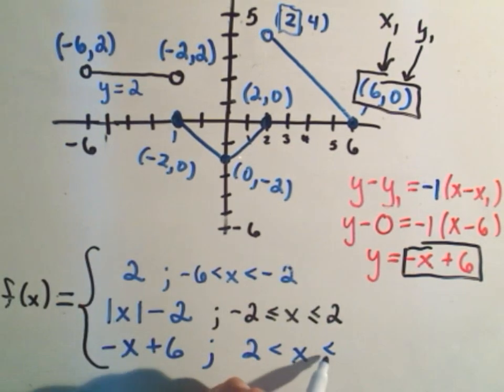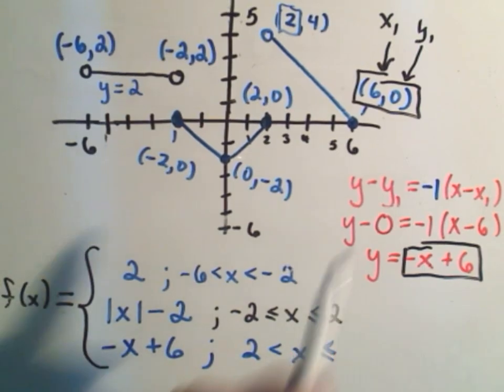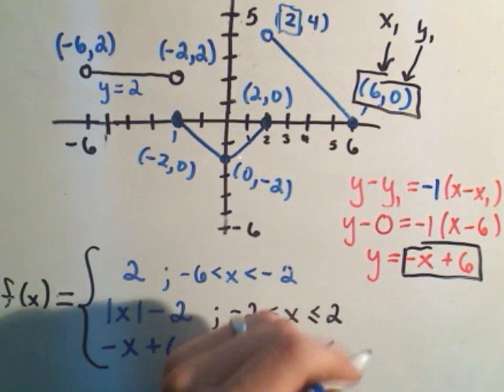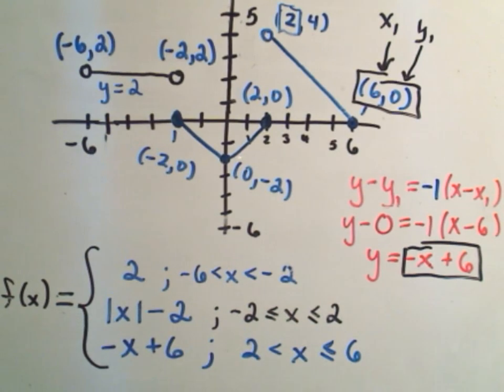Well, the right side's actually solid, the endpoint, so I should use less than or equal to. And again, I think what's the largest x-coordinate? The largest x-coordinate is 6. And now I have got a nice piecewise defined function that coincides with my graph.